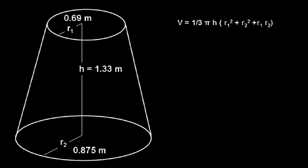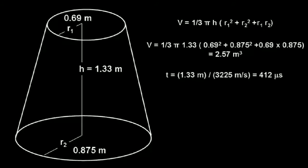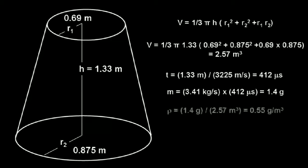That makes the volume 2.57 m3. The gas is moving through this volume at, let's use Gilliam's numbers again, 3,225 m per second. So to travel 1.3 m takes 412 microseconds. The total mass in this volume is the flow rate, use Gilliam's 3.41 kg per second, times the 412 microseconds, which equals 1.4 grams. Divide that into the volume, and you get a density of 0.55 grams per meter cubed.